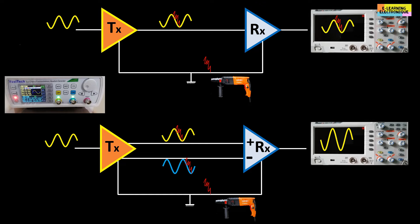If we analyze the signal on each wire, we find the same parasitic signal but keeping the same polarity on each wire, contrary to the sinusoidal signal which on one of the wires is in phase opposition.